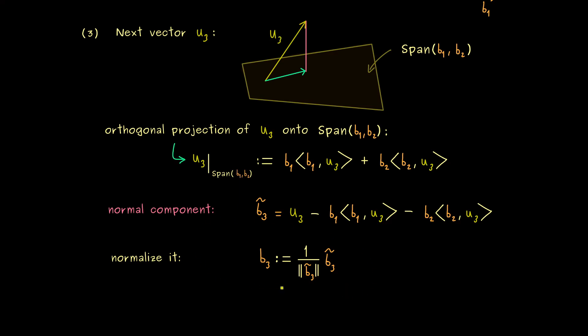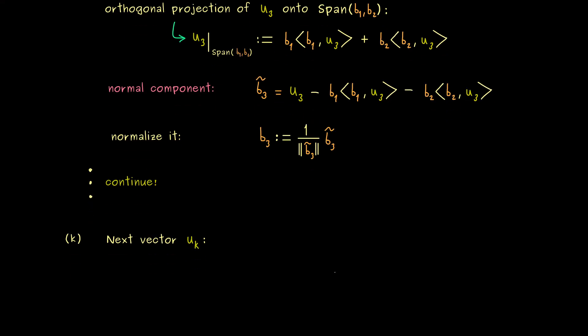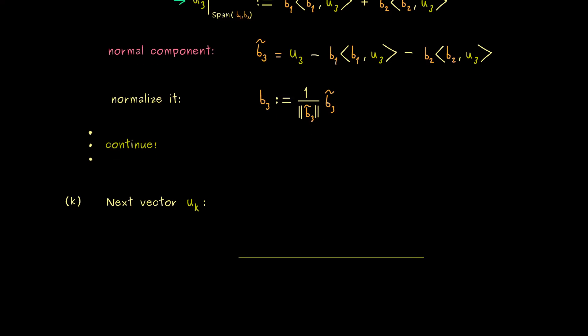Hence now we have an ONB of a three-dimensional subspace. In other words, we have to continue these steps here until we reach the kth step. Indeed, as you can see, all the steps look very similar. So it's sufficient to write down the last one. So we have the vector uk here, and the picture from before can be used again. This simply means we have a subspace spanned by the vectors before. So this represents a k minus 1 dimensional subspace. So in the span we have b1, b2, and so on until we reach b k minus 1.